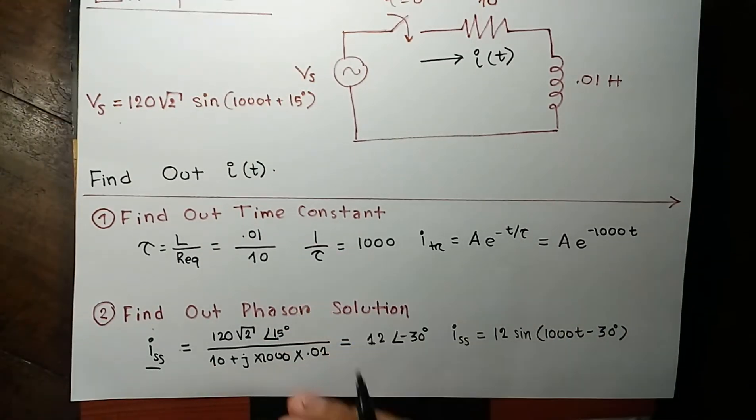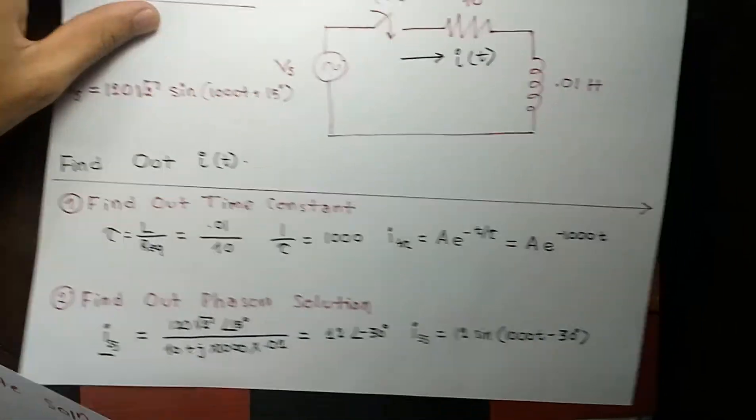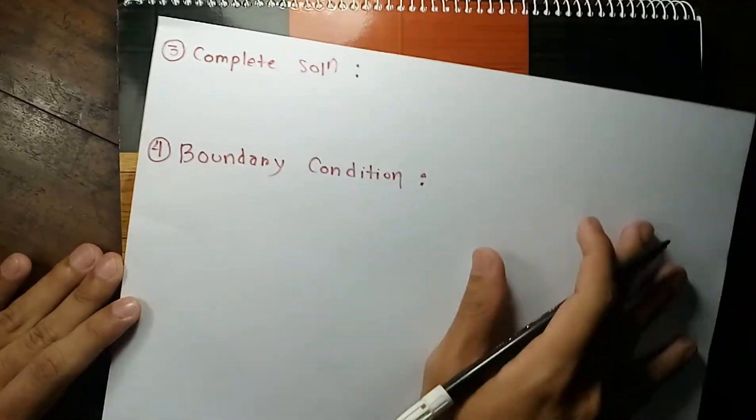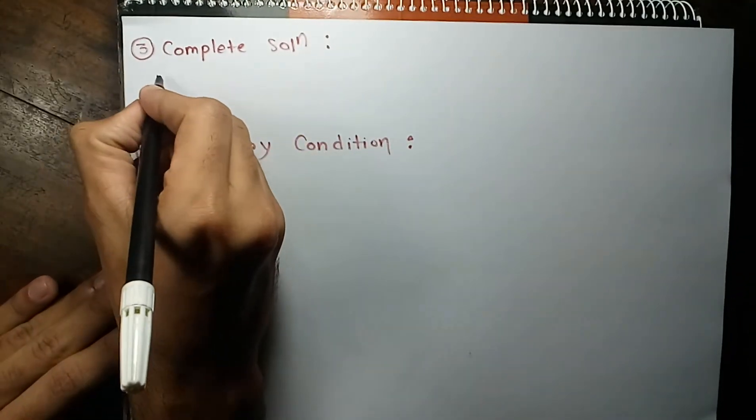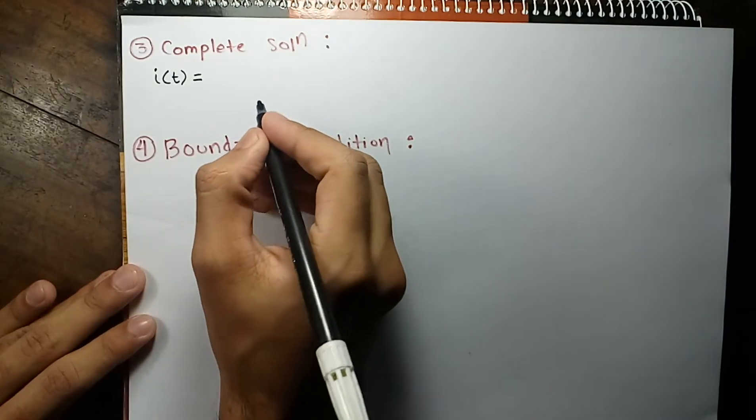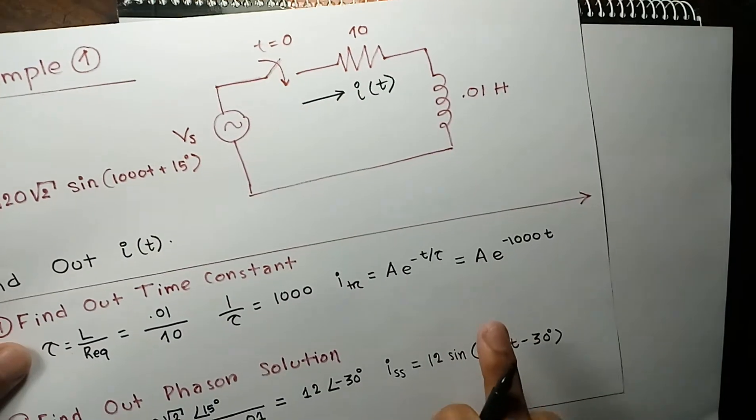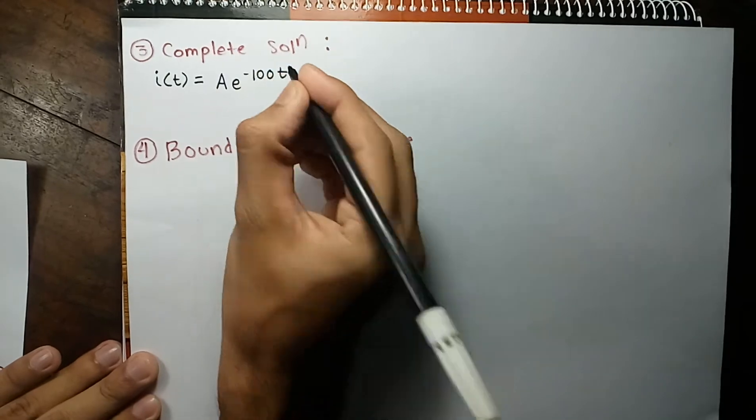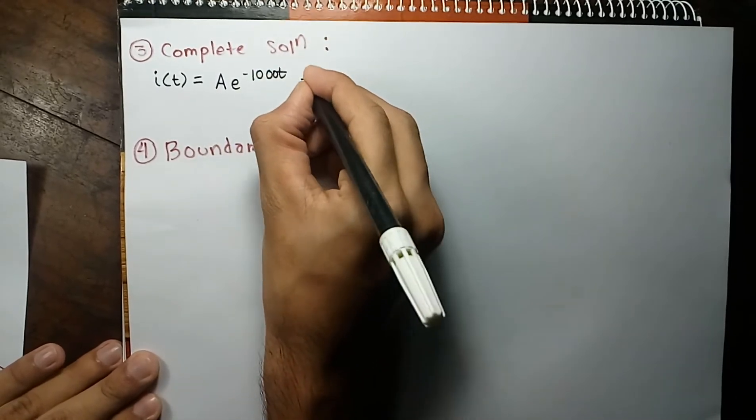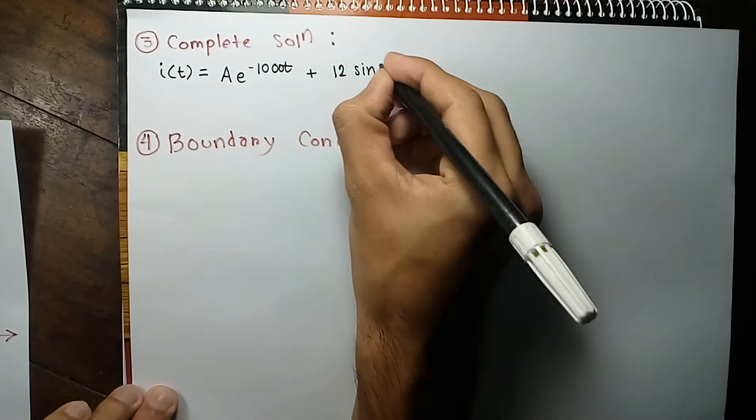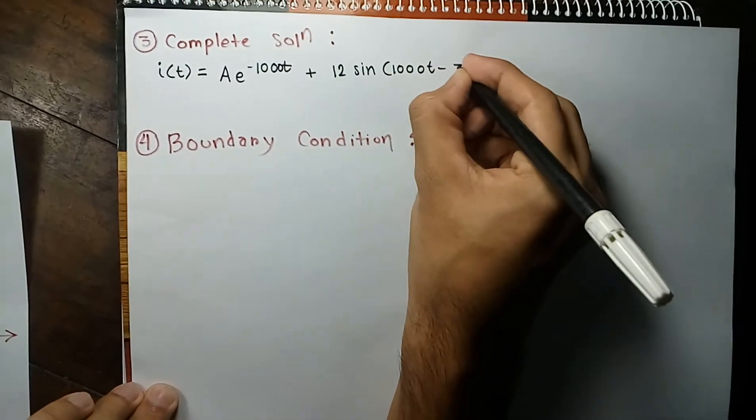This was our first two parts. We are going through the same procedure as described in the working rule. Now complete solution. As we have seen in the working rule, complete solution of current as a function of time will be the transient solution plus steady state solution. Our transient solution was A e to the power minus 1000 t. And our steady state solution was 12 sine of 1000 t minus 30 degree.